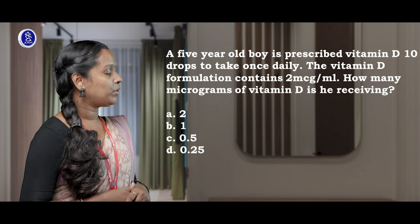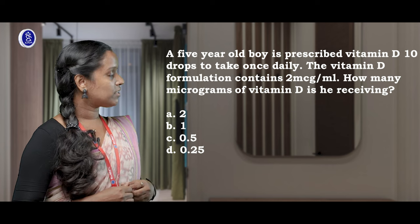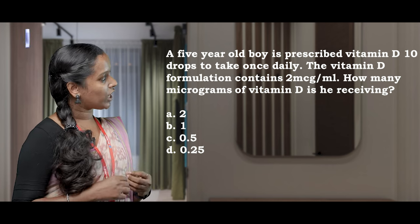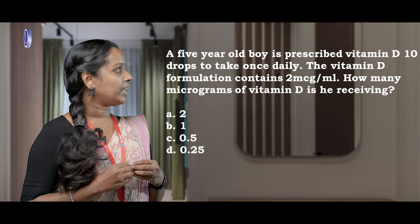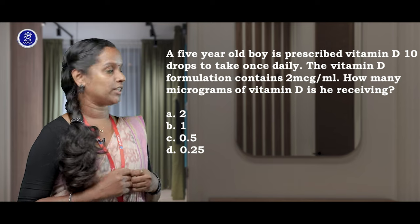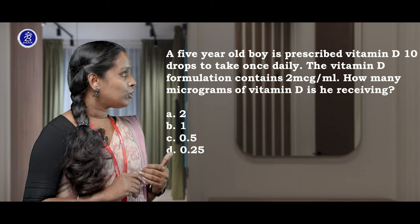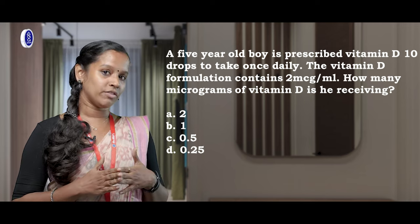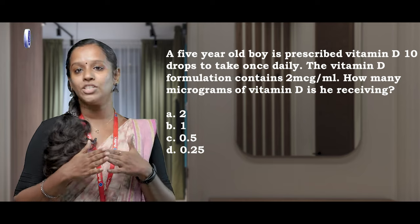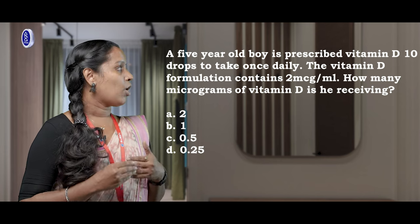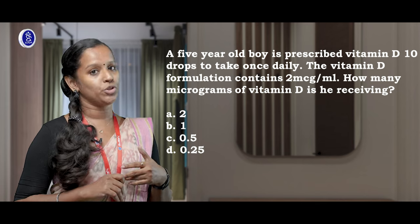A 5-year-old boy is prescribed vitamin D 10 drops to take once daily. The vitamin D formulation contains 2 micrograms per ml. How many micrograms of vitamin D in 10 drops is the child receiving? The options are: option A is 2, option B is 1, option C is 0.5, and option D is 0.25.